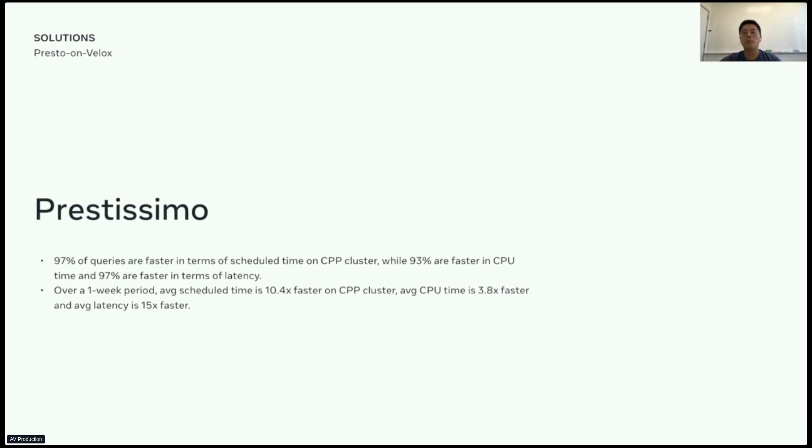And you might have known there is an ongoing project named Prestissimo, aka Presto on Velox. It rebuilds Presto workers using C++ and the Velox library for efficiency and tighter memory control. We are targeting to onboard experimentation platform as one of our first use cases when it's ready for production. In a recent test, we replayed the production queries from experimentation platform for one week. Comparing to our current Java-based stack, we observed 10 times latency reduction and more than 3 times CPU improvement. The results look very promising and we are very excited to productionize it in the future.